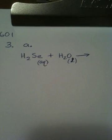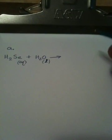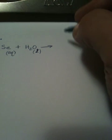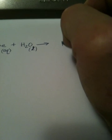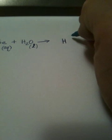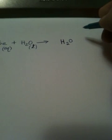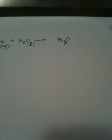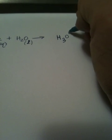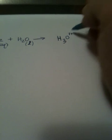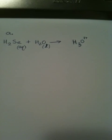And now, as we go over to the other side of the equation, the H2Se is going to give away one of its hydrogens, and that hydrogen is going to the water. And that gives us H3O+. That is the hydronium ion.